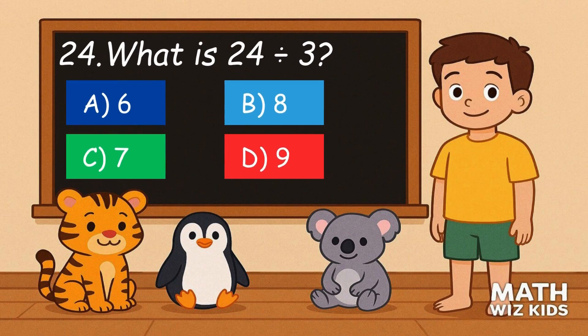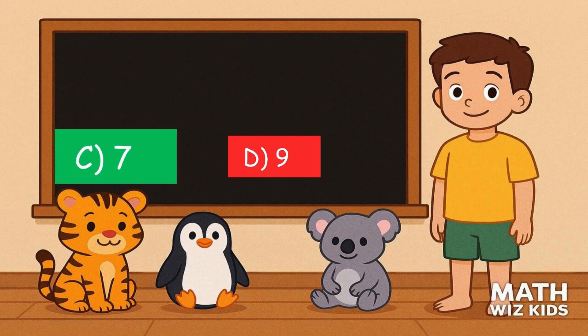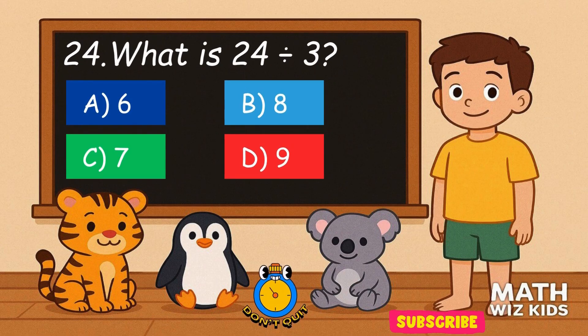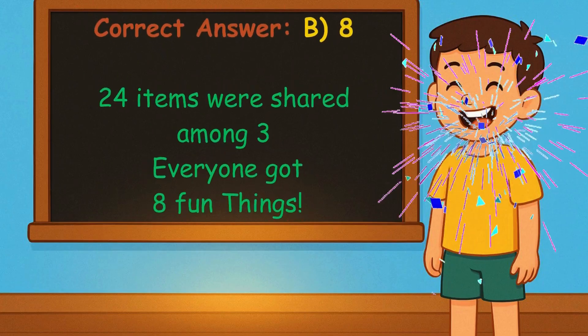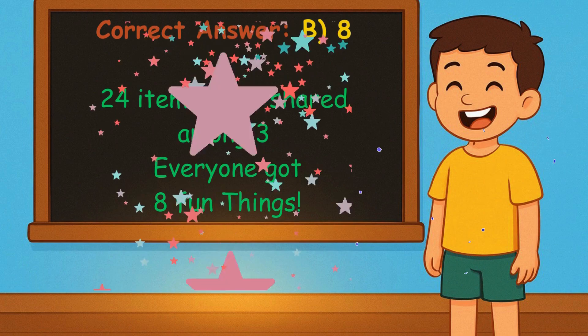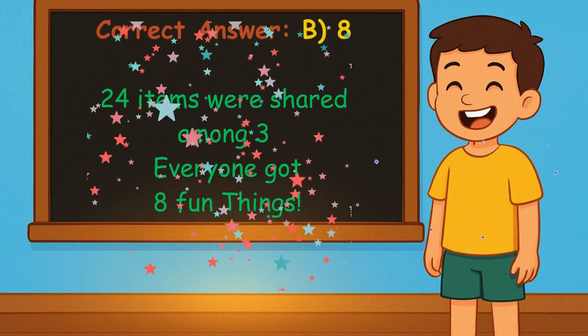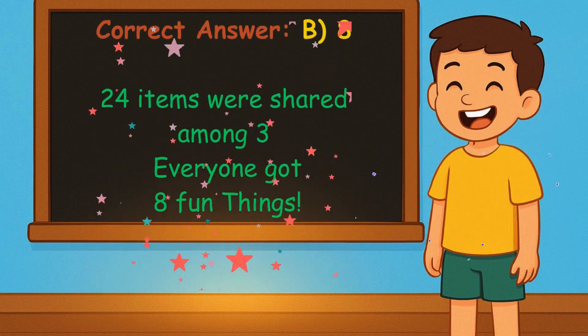24. What is 24 divided by 3? Is it A, 6, B, 8, C, 7, or D, 9? Correct answer is 8. 24 items were shared among 3. Everyone got 8 fun things.